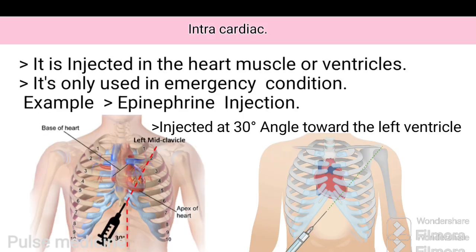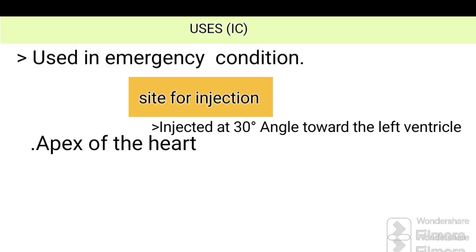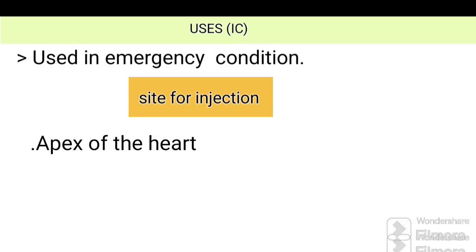Intracardiac injection is injected into the heart muscle or ventricles, and is only used in emergency conditions. The needle is inserted one centimeter to the left of the xiphoid process and aimed toward the left shoulder. The needle may also be inserted parasternally in the left fourth or fifth intercostal space. The injection site is the apex of the heart.